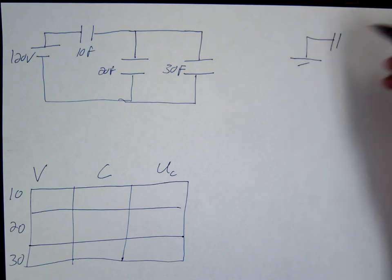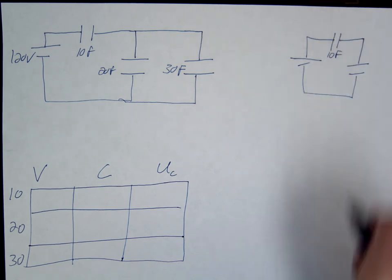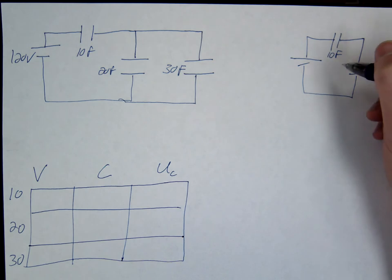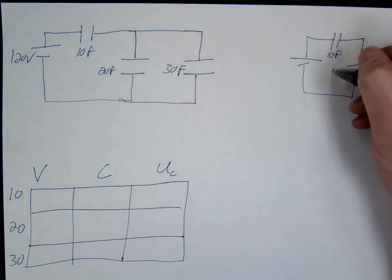So we're going to leave the 10 alone, just fix the parallel one. Remember you do the opposite, so this should be 10, and then this would be simple addition. So this is going to be 50.